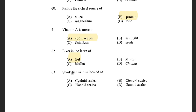Next question: Shark fish skin is formed of — options are Cycloid Scales, Ctenoid Scales, Placoid Scales, and Ganoid Scales. The answer is Placoid Scales. Sharks possess Placoid Scales. Latimeria and Lungfishes have Cosmoid Scales. Carps have Cycloid Scales, and Actinopterygii have Ctenoid Scales.